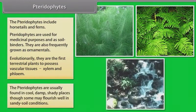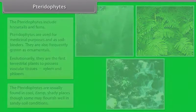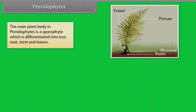Pteridophytes are usually in cool, damp, shady places, though some may flourish well in sandy soil conditions. The main plant body in pteridophytes is a sporophyte which is differentiated into true root, stem, and leaves.